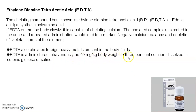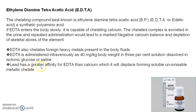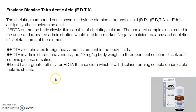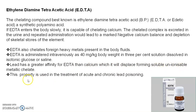EDTA is administered intravenously at 40 mg per kg body weight in a 3% solution dissolved in isotonic glucose or saline. Lead has a greater affinity for EDTA than calcium, which it displaces, forming a soluble unionizable metallic chelate. This property is used in the treatment of both acute and chronic lead poisoning.